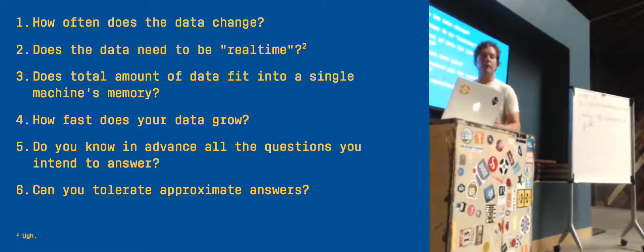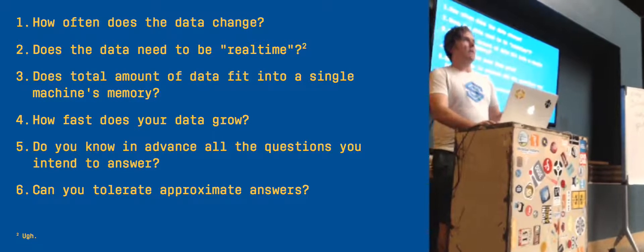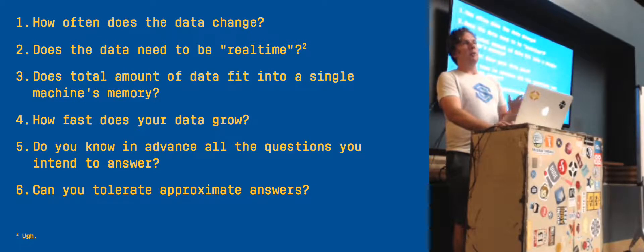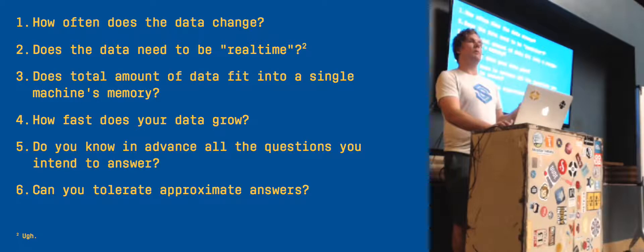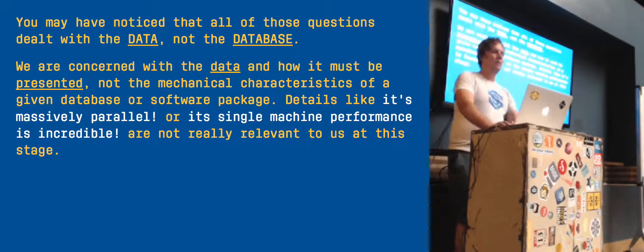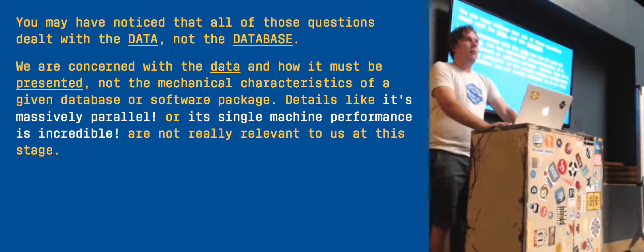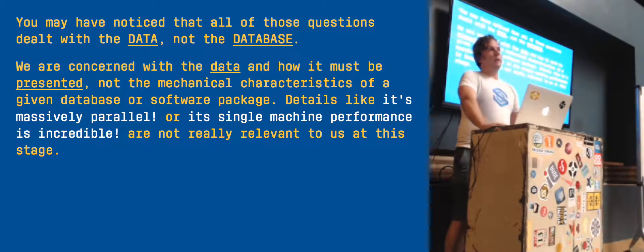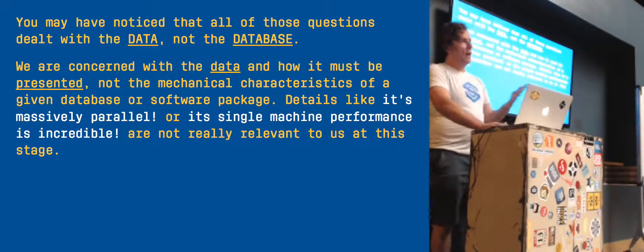Instead of trying to make something that's not very fast - frankly, Ruby is not super fast - if you are able to cut down the problem space, you don't have to worry about making it fast because you don't have to worry about dealing with that much data. You deal with the performance problem by removing the problem. All those questions are about data - not about databases, not about whether there's a faster database on the market.